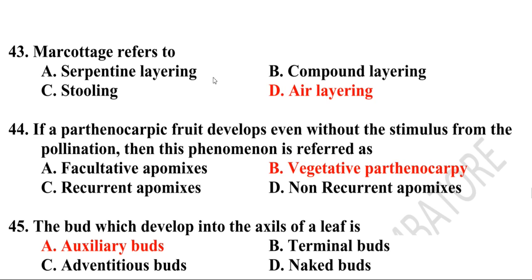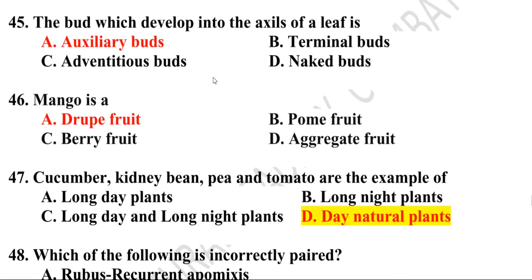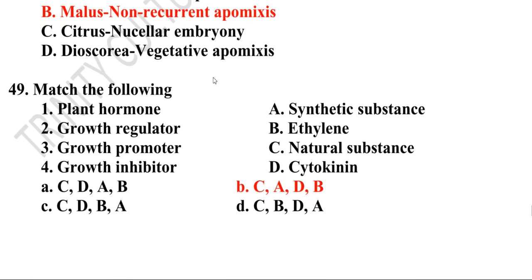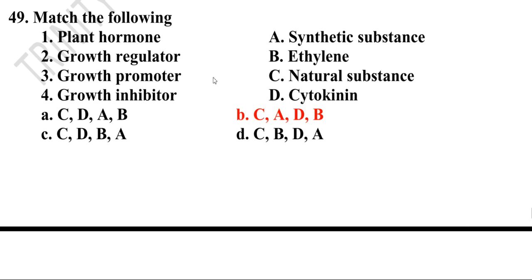The correct answer is option A: axillary buds. Forty-sixth question: Mango is a drupe fruit. Forty-seventh question: Cucumber, kidney bean, pea, and tomato are examples of day-neutral plants. Forty-eighth question: Which of the following is incorrectly paired? Option B — malus non-recurrent apomixis. This is incorrectly paired.